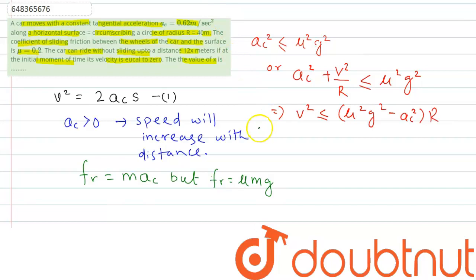Now if we simplify this further, we will write Vmax will be root over of mu squared G squared minus AC squared into R, which is the radius of that sliding car's path. So we can write the distance...